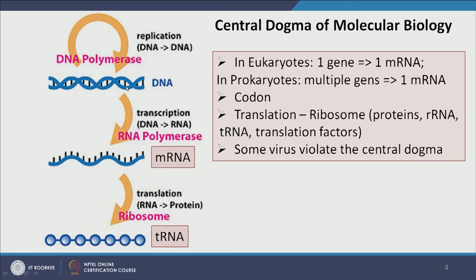In eukaryotes, usually one gene will be converted into one mRNA. In prokaryotes, let us say there is one gene, another gene, and four more genes — all these genes can be transcribed into a single long mRNA. So in prokaryotes, transcription can happen very fast and energetically very efficiently. This mRNA goes to the ribosome, which involves synergistic efforts of ribosome, proteins, translation factors, and tRNA. The ribosome is constituted of proteins and ribosomal RNA. It makes use of transfer RNA and translation factors to create proteins using the mRNA as a template.